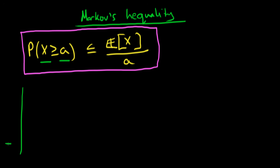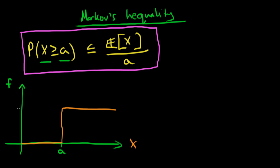So how are we going to prove this? We need to create a function. For values of x which are less than or equal to a, our function takes on the value 0 — it runs along the floor of the x-axis. For values of x which are greater than or equal to a, it takes on the value of 1. It's a step function, and it's called the indicator function, written as 1 subscript {x ≥ a}.